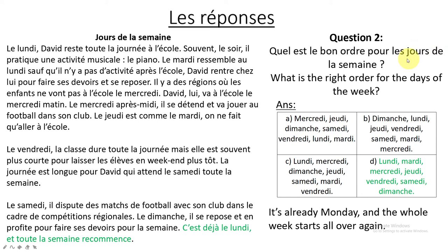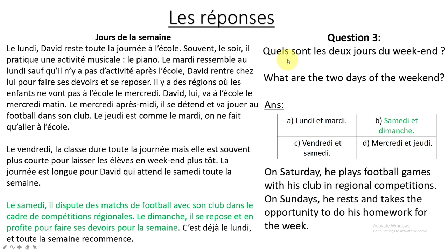Question two: Quel est le bon ordre pour les jours de la semaine? What is the right order for the days of the week? The answer is in the text: 'C'est déjà le lundi et toute la semaine recommence.' So it is already Monday and the whole week starts all over again. That means the week starts on Monday, so the correct answer is D — lundi, mardi, mercredi, jeudi, vendredi, samedi, dimanche.